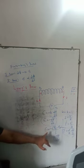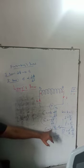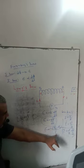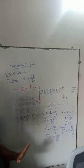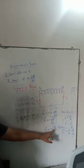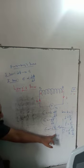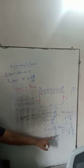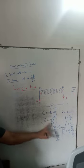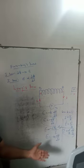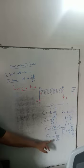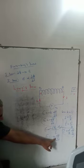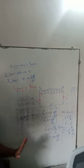This can also be written as epsilon equal to minus of (phi2 minus phi1) divided by t, where phi1 is initial magnetic flux, phi2 is final magnetic flux, and t is the time taken. If the coil has N number of turns, then epsilon equals minus N into dΦ/dt.